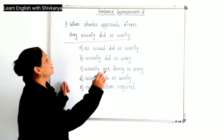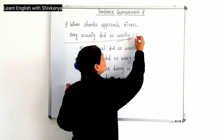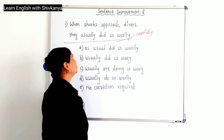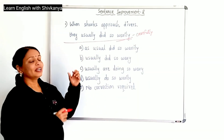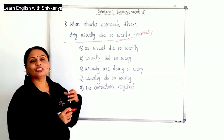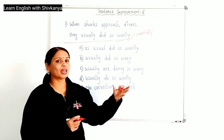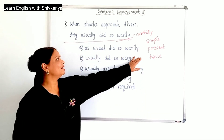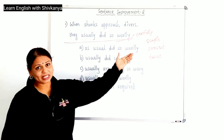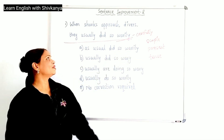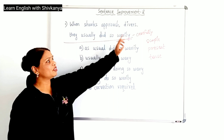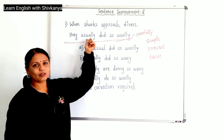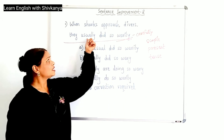First we need to understand the meaning of 'verily' — it means carefully — so that the meaning of the sentence is clear to you. If you look at the sentence, it tells about the general behavior of the sharks. This sentence is in the simple present tense. Why simple present tense? There are three evidences. The first: 'approach' is the verb, which is in the simple present tense.